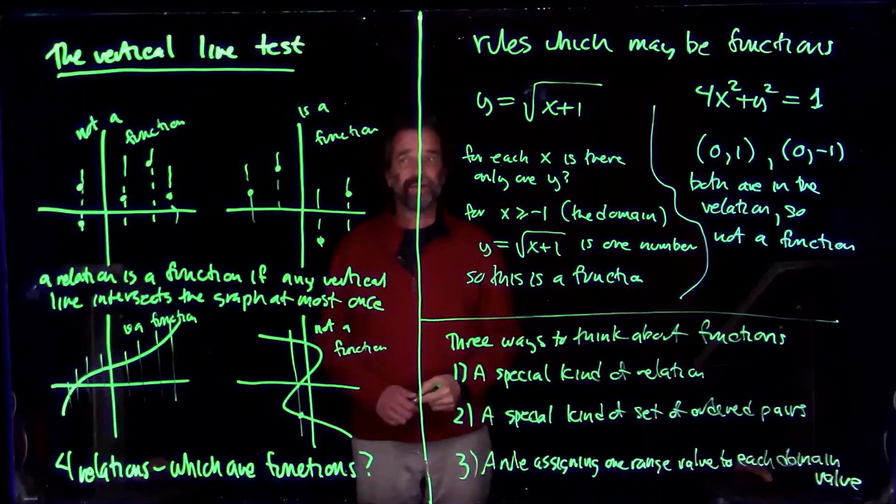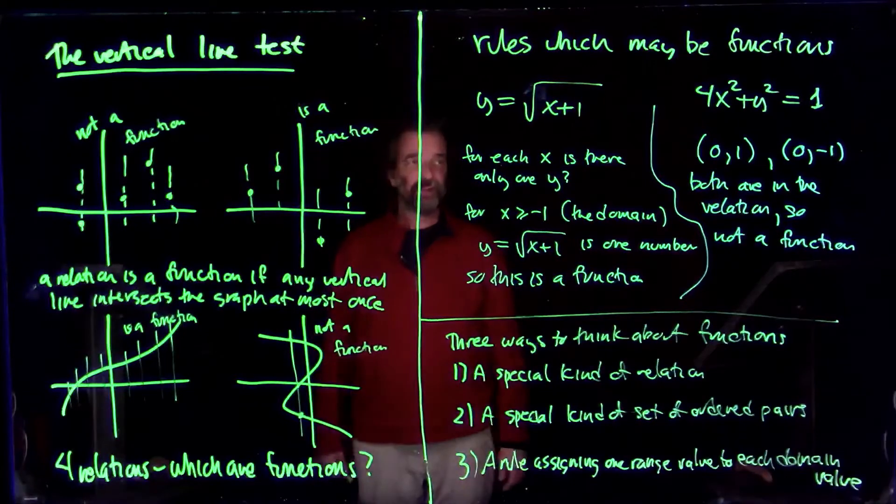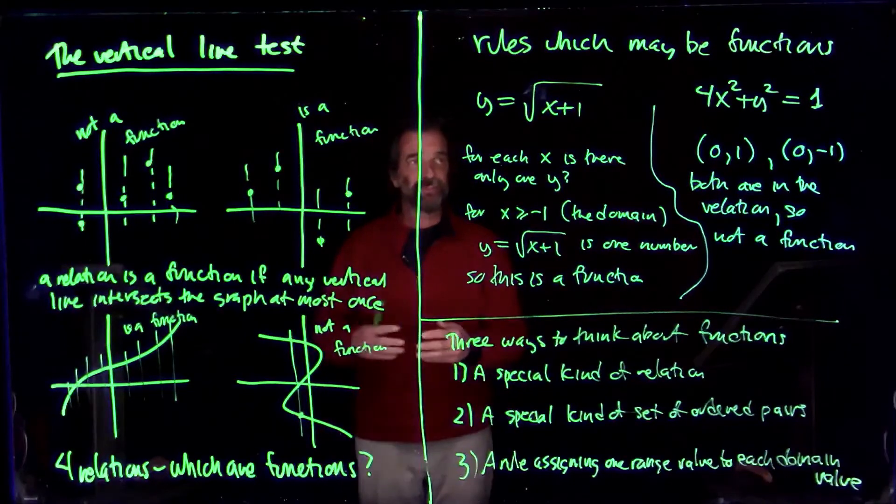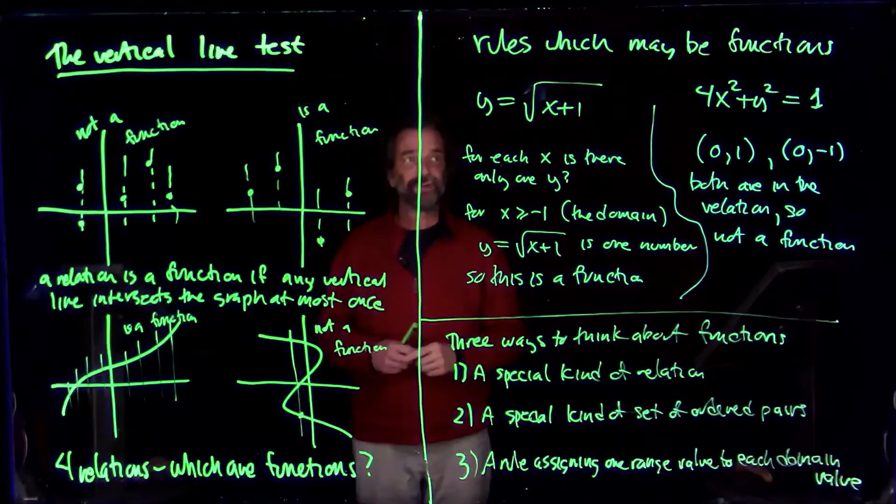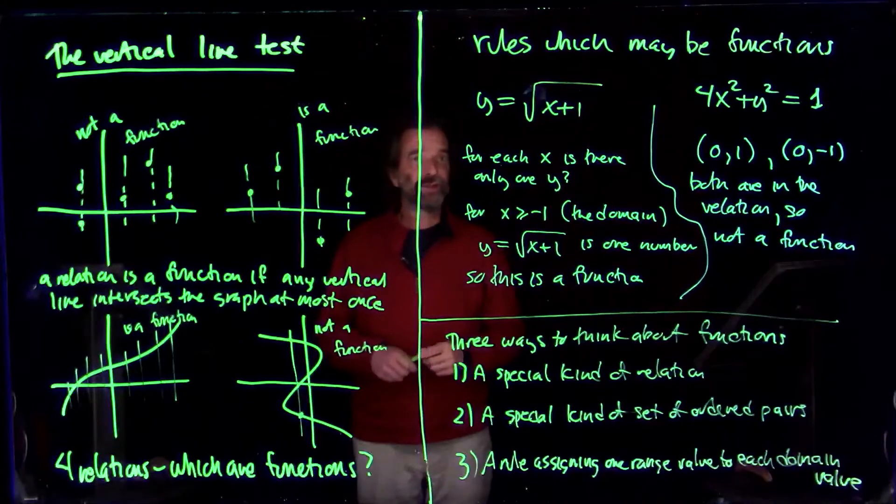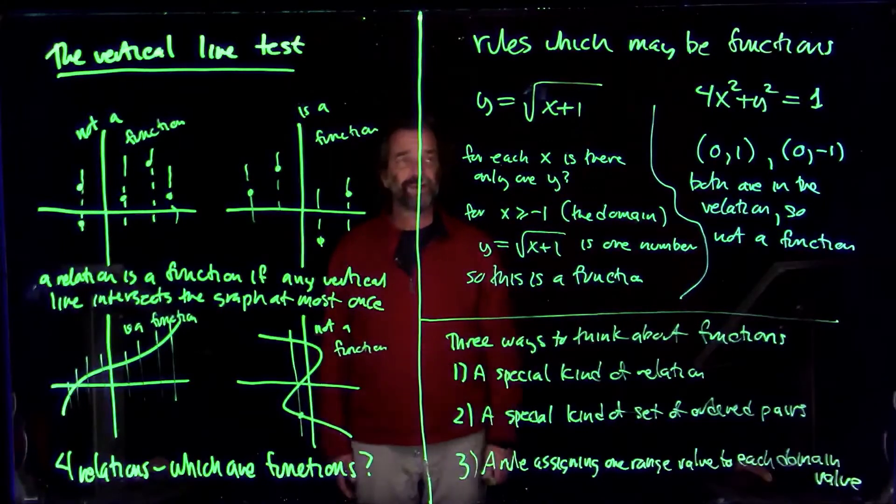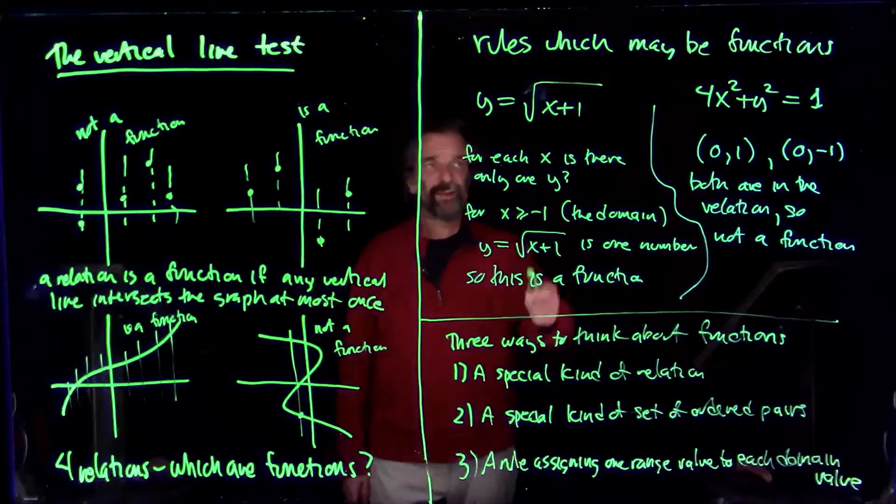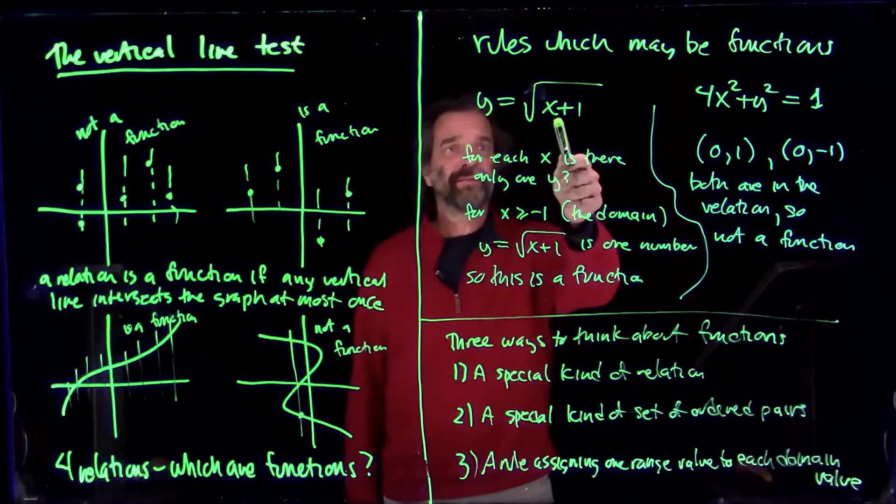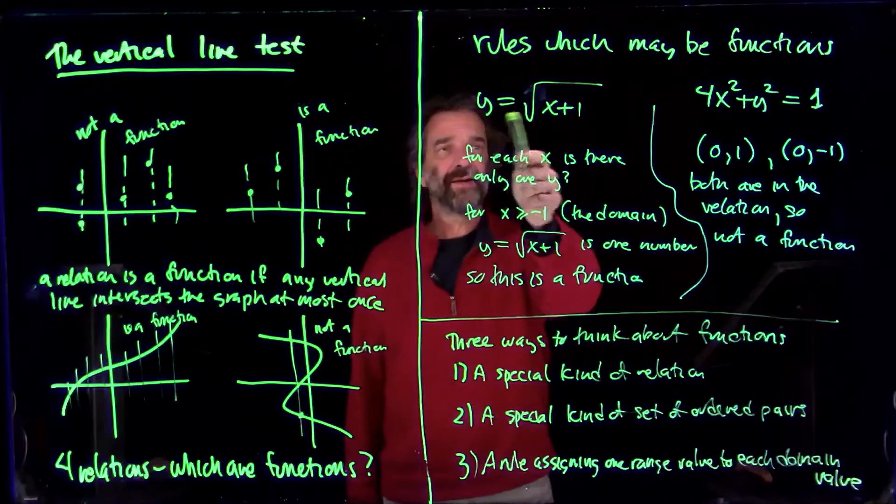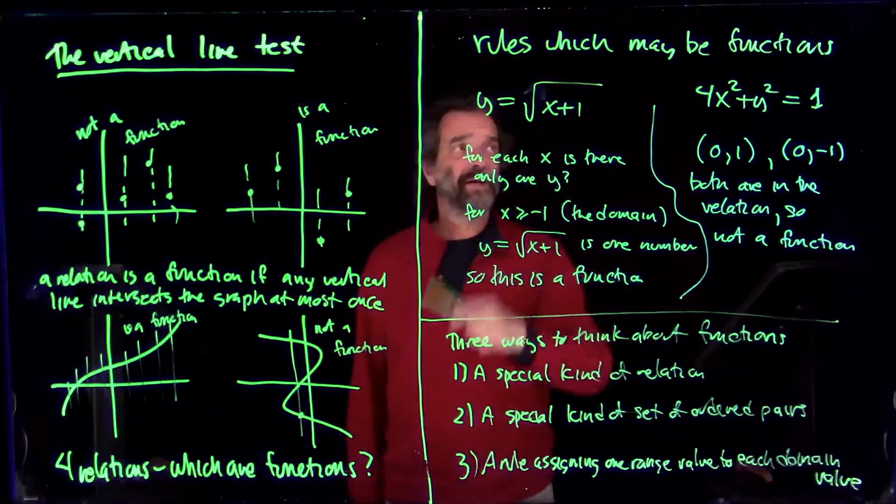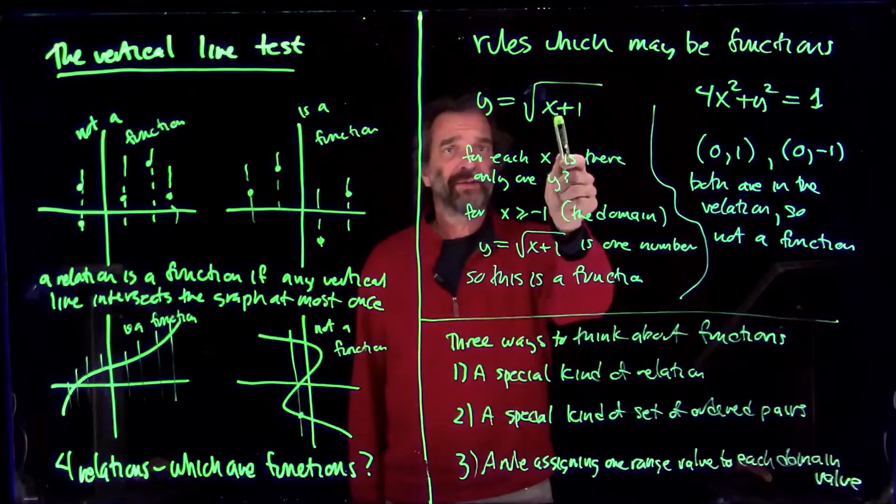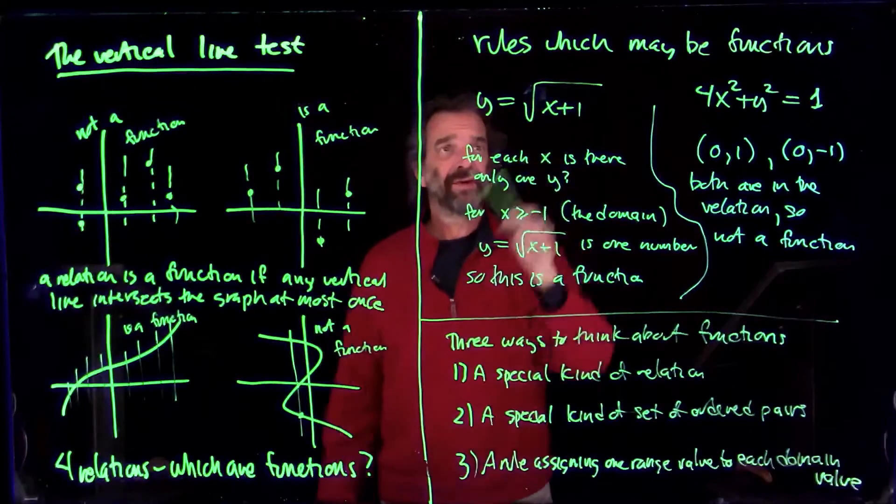So showing something is not a function, it's just a matter of finding the same x values associated with different y values. Showing something is a function, you have to show for each x, there's only one y. So you'd have to run through all possible x's. If it looks like for every possible x, there's only one y, like here, because y is just a formula based on x. Then for each x, there's exactly one y. It's this number, square root of x plus one.